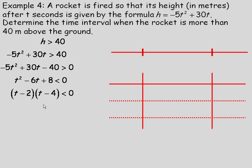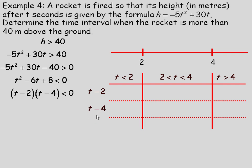Setting each factor to 0 gives t equals 2 and t equals 4. Placing 2 and 4 on the number line gives three intervals: below 2, between 2 and 4, and greater than 4. We place the two factors t minus 2 and t minus 4 on the chart with their product below. Testing a number below 2 — for example, 0 — gives 0 minus 2 as negative and 0 minus 4 as negative. The product of two negatives is positive.